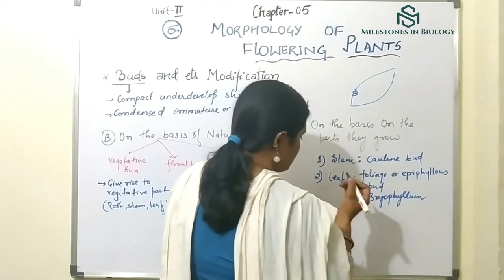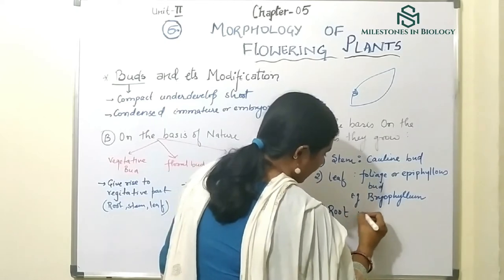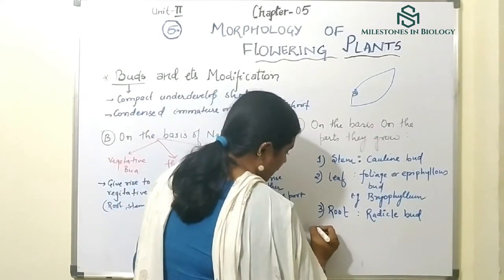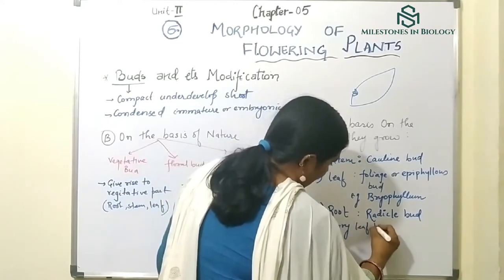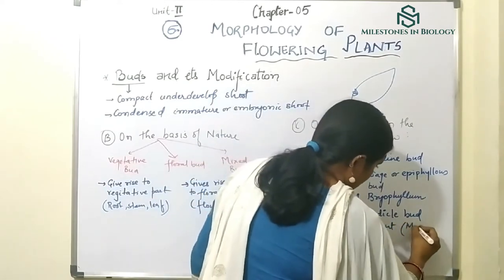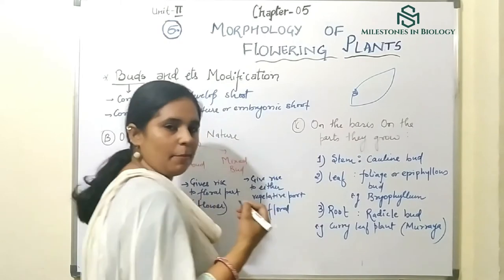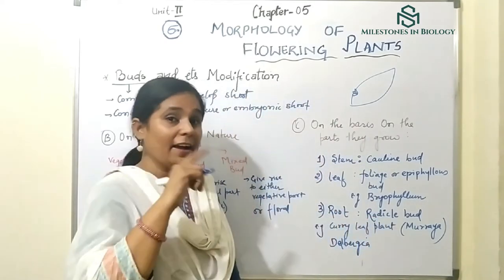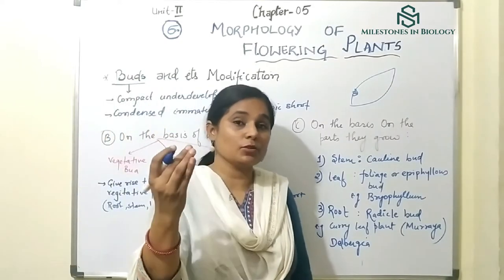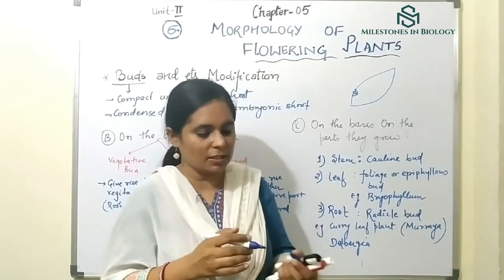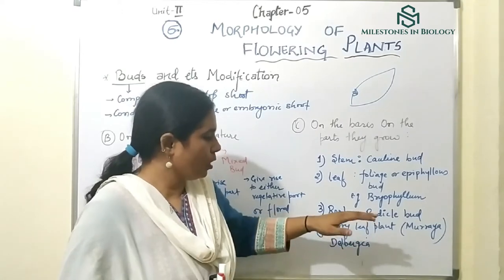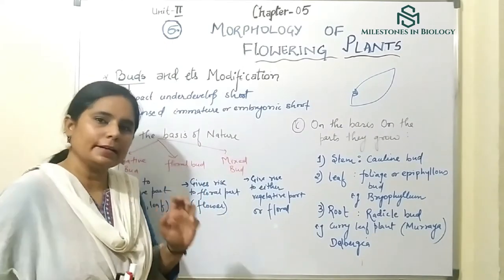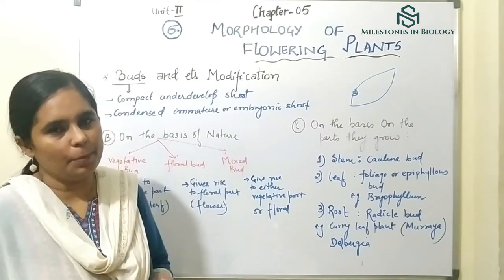The third category: if the bud grows on the root, it is called a radical bud. This is seen in the curry leaf plant — scientific name Muraya — and also in Dalbergia. In both cases, a bud on the root develops into a whole plant, meaning the root helps in vegetative propagation. A bud growing on the root is known as a radical bud.